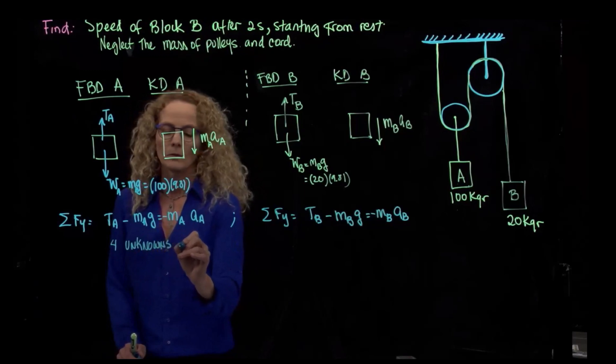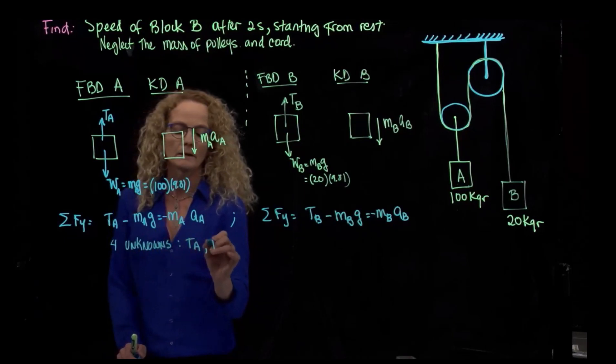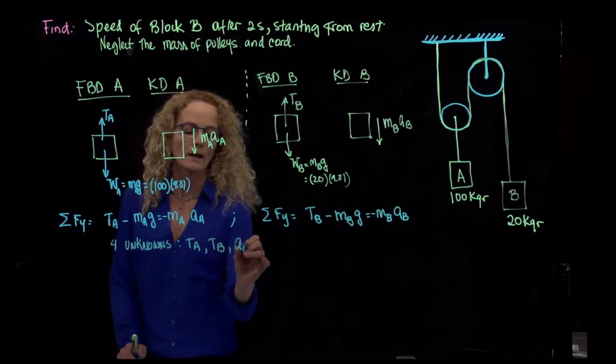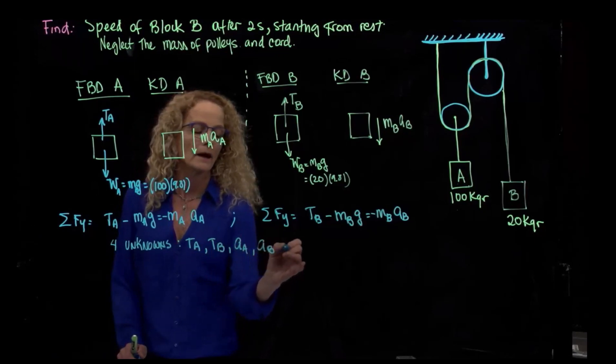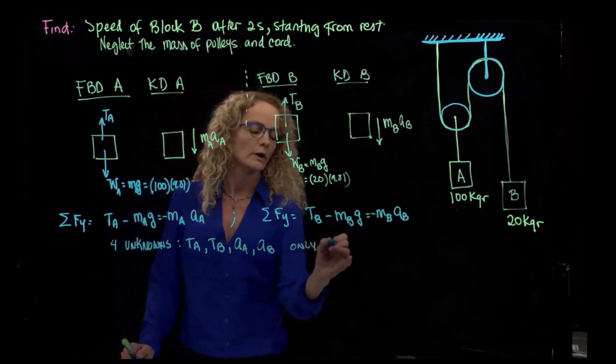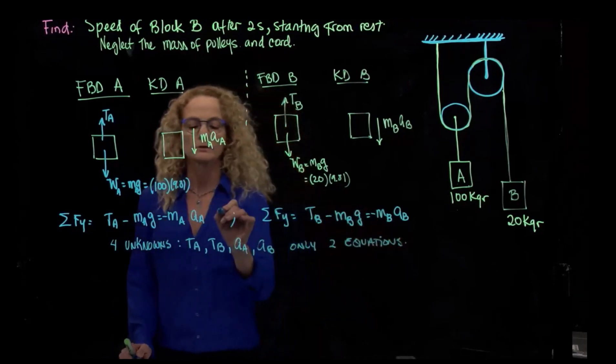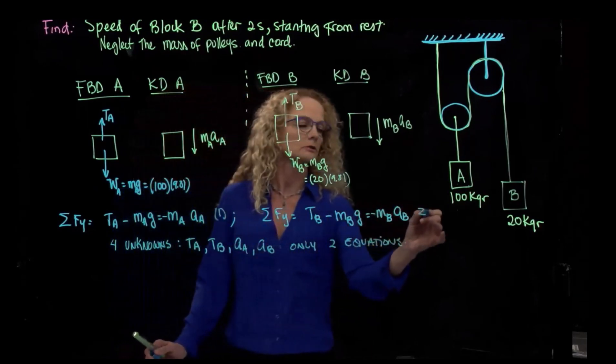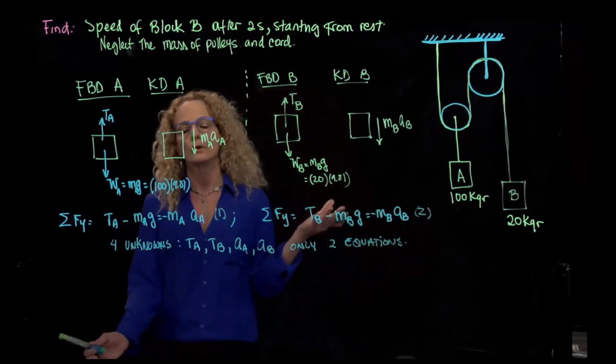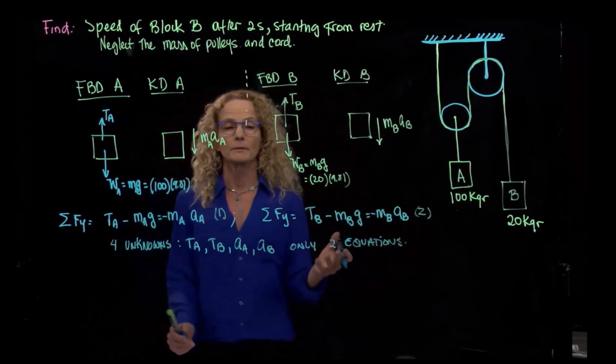Which are TA, TB, AA, and AB. And only two equations. What are my equations? This is my one equation, and this is two equations. So I need to find more equations to be able to solve it.